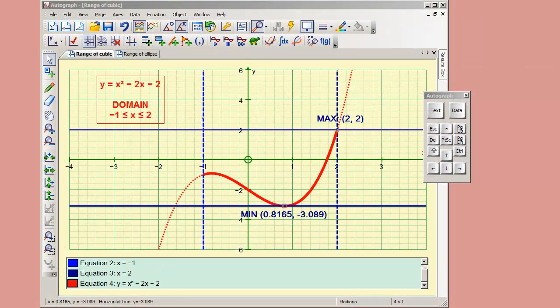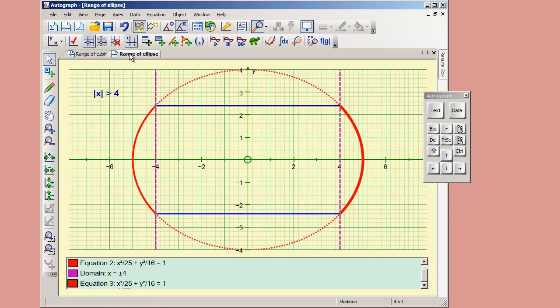This is a tutorial about range and domain using Autograph. We're going to look first at a simple cubic, examining the range corresponding to a given domain, and then look at some exercises concerning an ellipse.